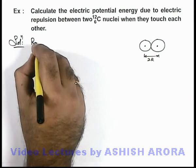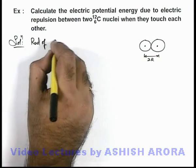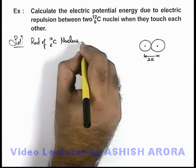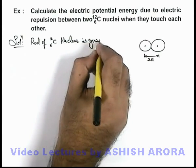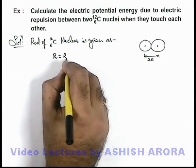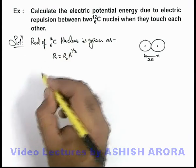So here first we calculate radius of carbon-12 nucleus. This is given as, we can directly calculate as R is equal to R₀A to the power 1/3.